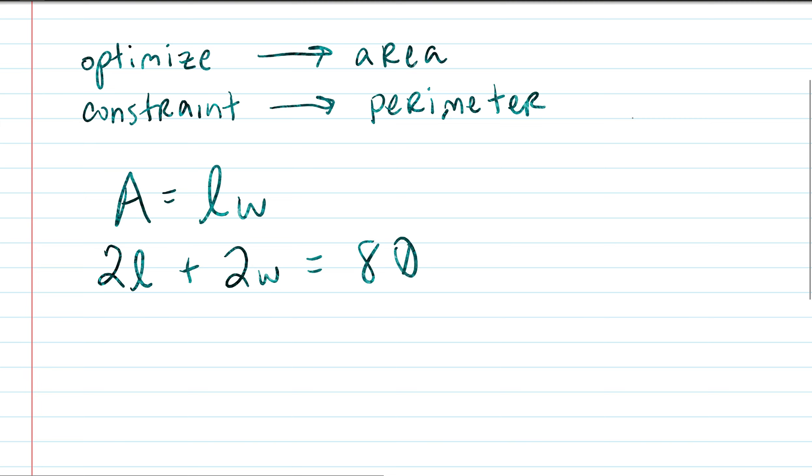After you do that, that's the big step. You want to rewrite the area in terms of one variable. Right now it's in terms of more than one, so we're going to rewrite it in terms of one using the constraint. Here, l is going to equal 40 minus w.